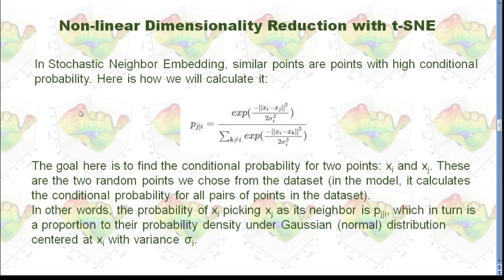In t-SNE, similar points are points with high conditional probability. We use this formula to calculate conditional probability. Here, we have two points, xi and xj. And this part means the distance between xi and xj. And this is the variance which is centered at xi under normal distribution.